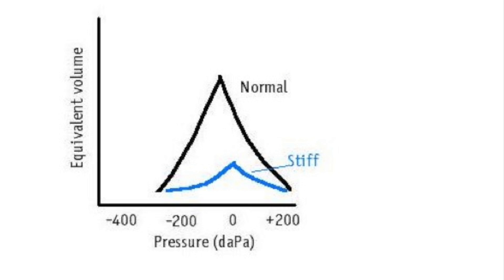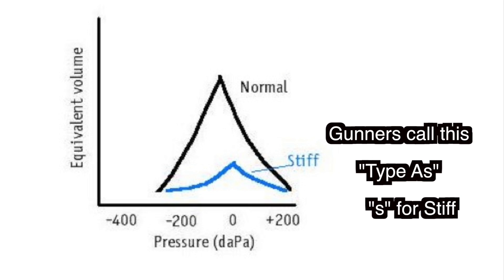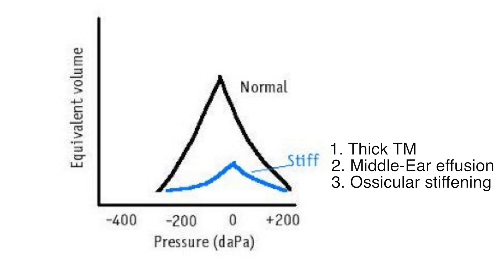If the peak is really low, this means there's normal pressure in the middle ear, but the tympanic membrane itself is stiff. This could be from thickening of the tympanic membrane from scarring, middle ear effusion, or ossicular stiffening.